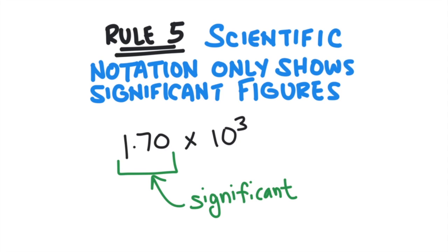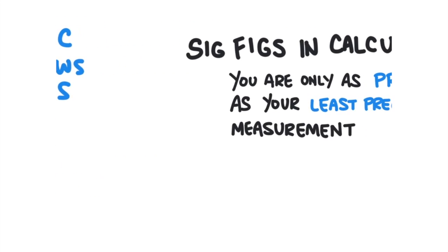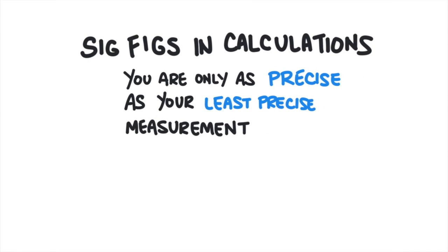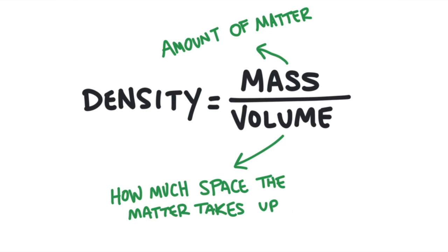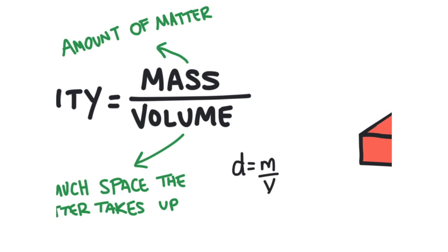We need to keep track of the significant digits when we do arithmetic in science. You can only be as precise as your least precise measurement, so you need to keep track of significant figures as you perform calculations. Let's practice this by calculating the density of an object. Density is a measurement that relates the mass of a substance to its volume. Mass is a measurement of the amount of matter, and volume is the measurement of how much space the matter takes up. A very dense object will have a lot of matter in a small amount of space. To calculate density, divide the mass by the volume of the object. D equals m over v.